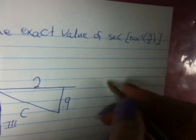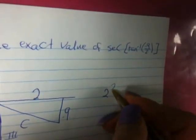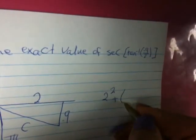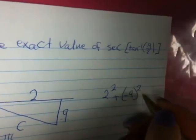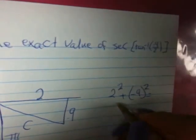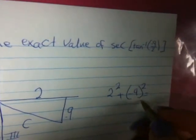We find our hypotenuse by formula: 2 squared plus negative 9 squared, which equals 2 squared plus 9 squared.